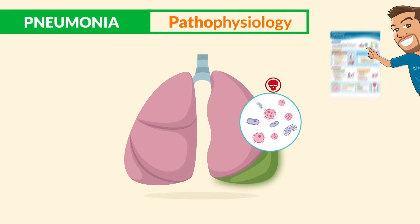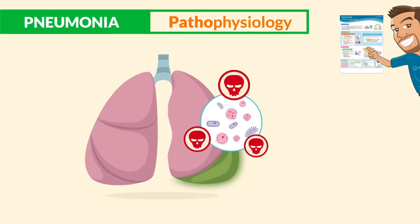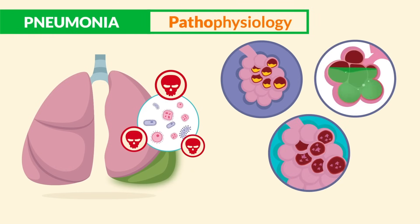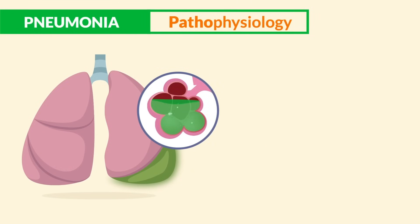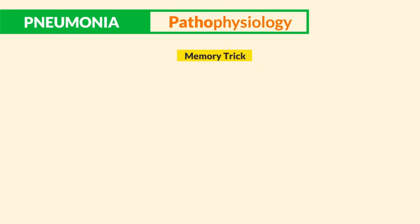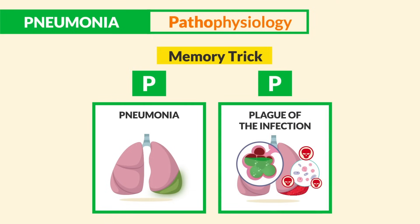Pneumonia is a nasty infection causing severe inflammation in the lungs and causing the alveoli to fill with mucus, fluid, and debris. This extra fluid can make it harder to breathe. The memory trick: think P for pneumonia as P for a plague of inflammation inside the lungs that fills the alveoli with fluid.